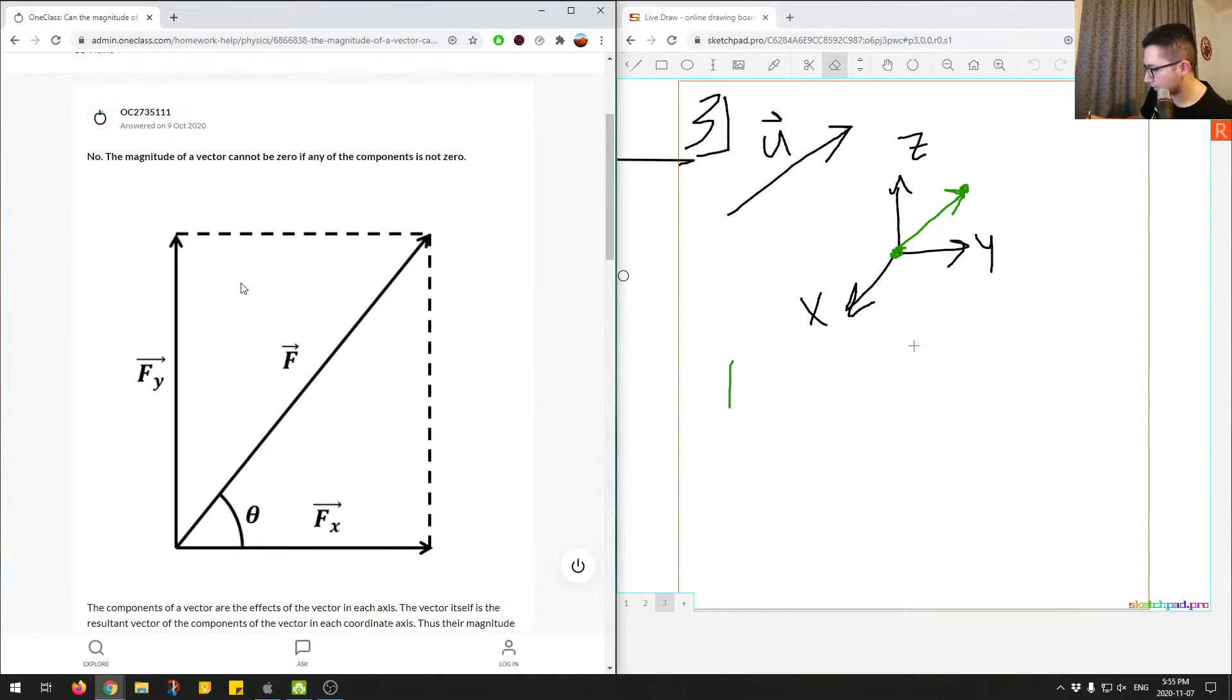And you can think of the force over here. If you were to calculate the magnitude, it would be the square root of Fx squared plus Fy squared. So that would be the magnitude of this force. Let me just write that a little better.